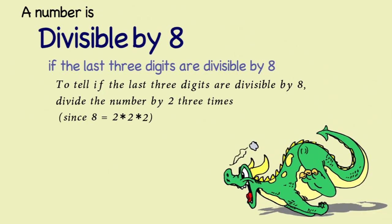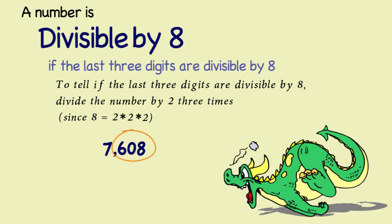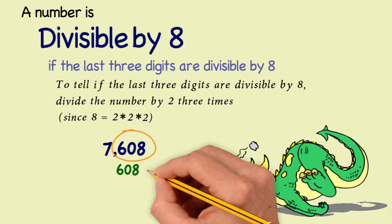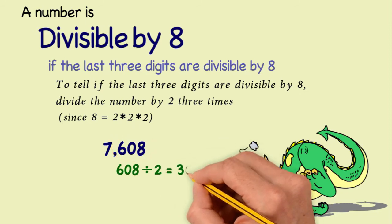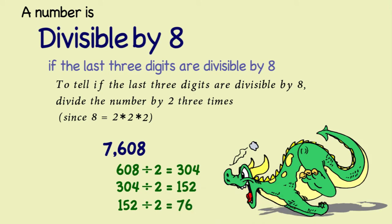Next, 8. Our example number this time is 7,608. You take the last three digits, 608. You divide it by 2, getting 304. Divide that by 2, getting 152. And you know that it's divisible by 8, because you've divided it in half three times successfully.